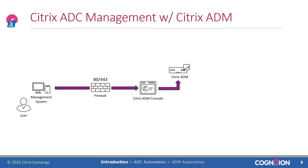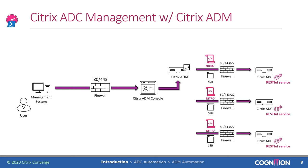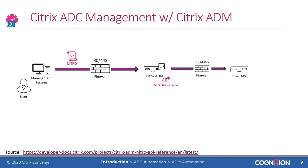Citrix also introduced the ADM — the Application Delivery Management appliance — which provides you with a centralized management option for the Citrix ADCs in your environment. The ADM console also uses Nitro calls or SSH to perform administrative tasks on Citrix ADCs through that RESTful service. When I say centralized management, I mean that ADM is designed to manage multiple ADC appliances within your infrastructure. And the cool part is that ADM not only is able to use Nitro calls, but it also has its own RESTful service, allowing you to use Nitro calls for your ADM management actions as well.